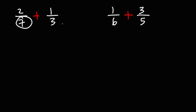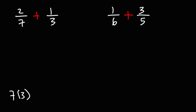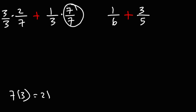A quick way to find the common denominator is to multiply the two denominators. So 7 times 3 is 21. I'm going to multiply the first fraction using the denominator of the second, and I'm going to multiply the second fraction using the denominator of the first. So I'm going to multiply by 7 over 7, which has a value of 1, which does not change the value of this fraction.